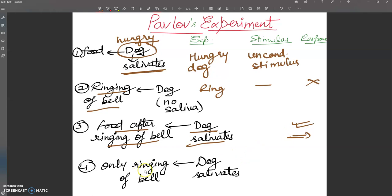Next condition: only ringing of bell. The bell rings and the dog salivates, because previously the dog felt that when the bell rings, food will come. But only ringing of bell is not followed by food - no food was given, only the bell was rung. So this ringing of bell becomes an acquired conditioned stimulus.